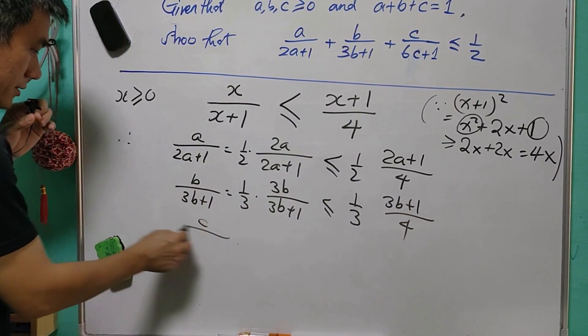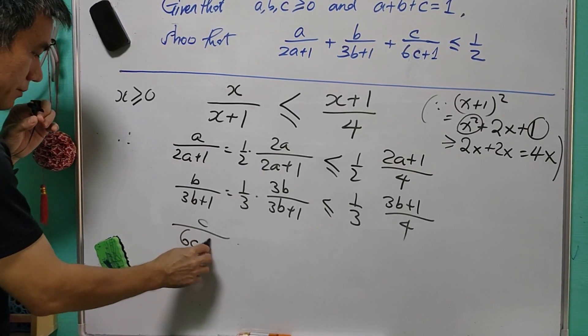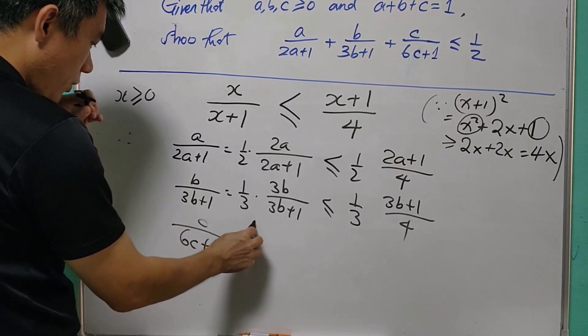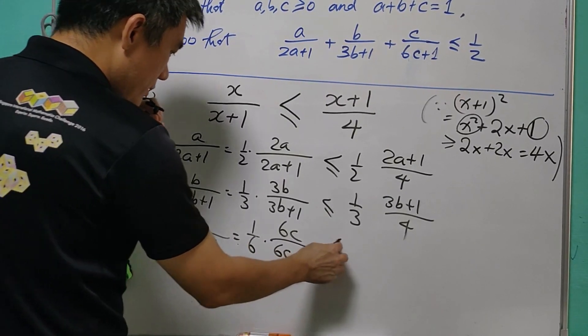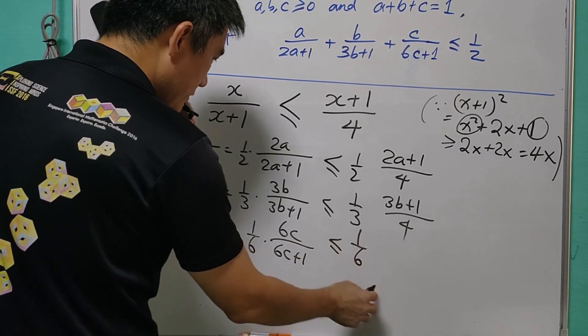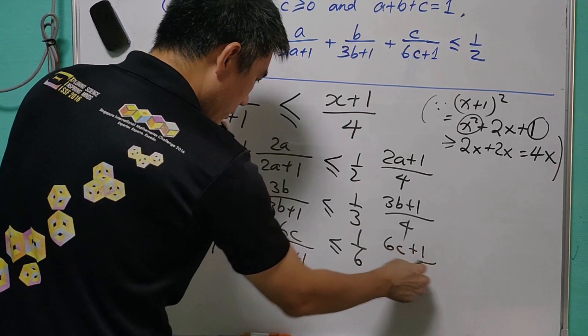Last but not least, C over 6C plus 1 is equal to 1 over 6, 6C over 6C plus 1 is less than or equal to 1 over 6, 6C plus 1 over 4.